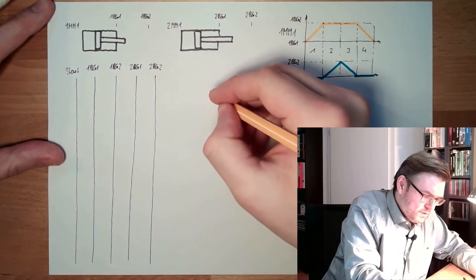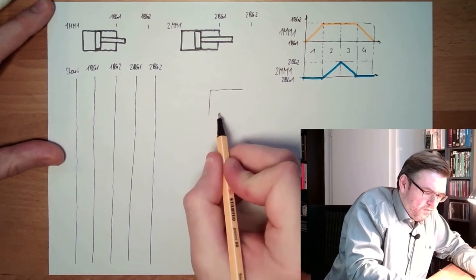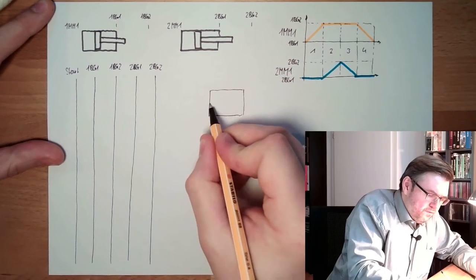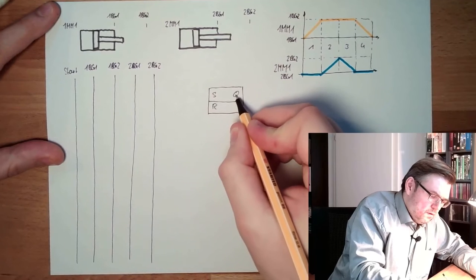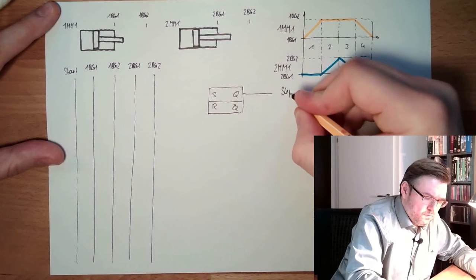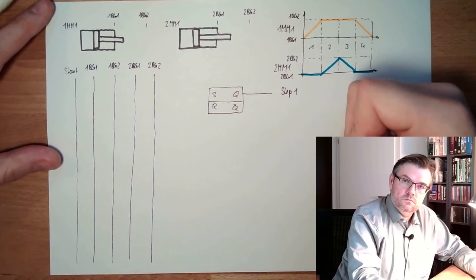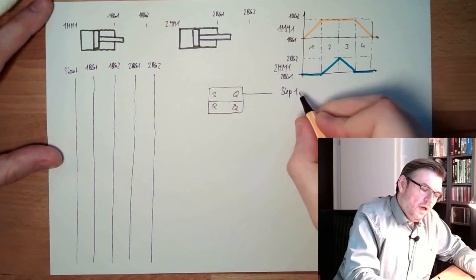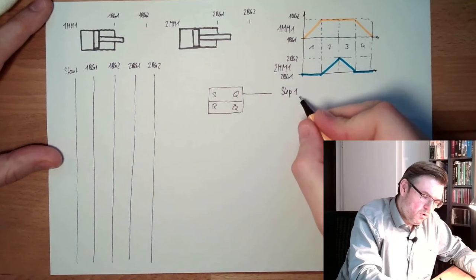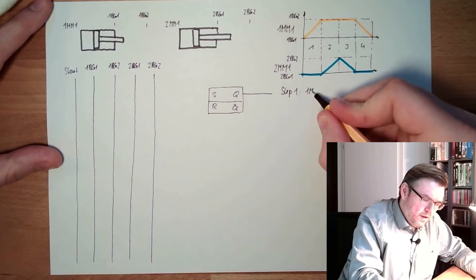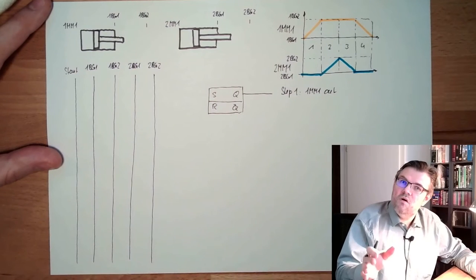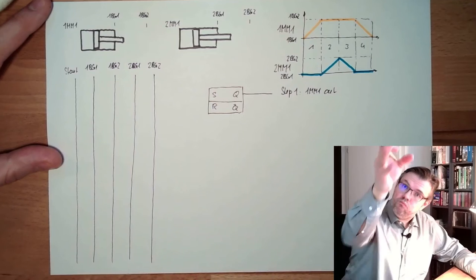And now I will simply draw an SR flip-flop. If this is set, we are in step one. In step one, this is immediately the command: step one, one MM1 out. This already gives the command. We are in step one, okay, go.